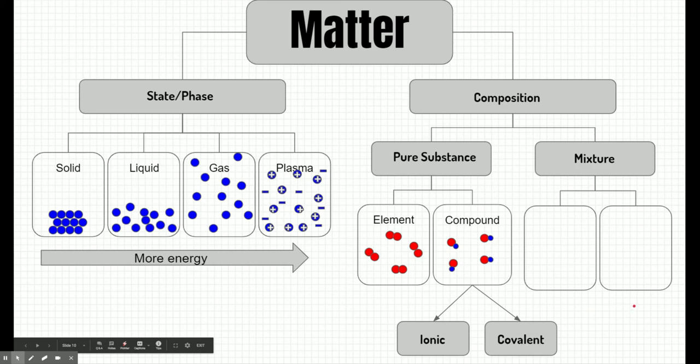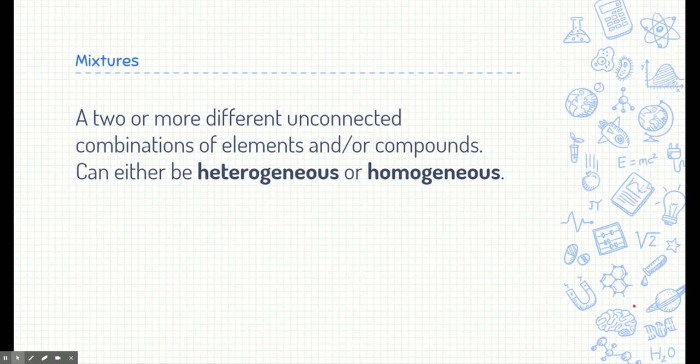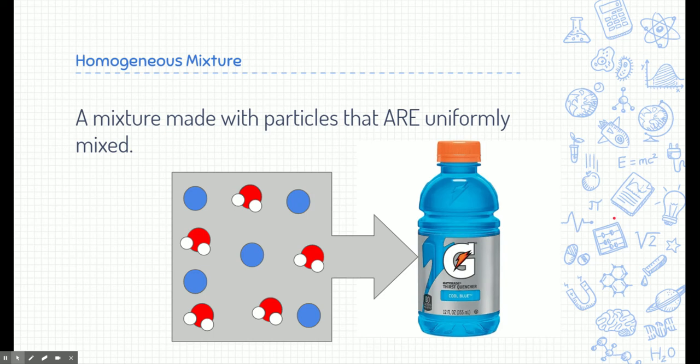Let's talk about mixtures, the other way we can classify matter based on its composition. A mixture or mixtures are two or more different unconnected combinations of elements or compounds, and they can either be heterogeneous or homogeneous. This slide is mostly a definition. Probably doesn't mean much just looking at it. Let's take a look closer at two different types of mixtures. The first one we're going to look at is a homogeneous mixture. Homo means the same. So in this term, a homogeneous mixture is a mixture with particles that are uniformly mixed or they're the same throughout. Let's take a look at Gatorade. If you've ever drank in Gatorade, this is just a sugary drink. We've oversimplified this drink to be just sugar and water. If we were to take a close look, here's what the particles would look like. Notice that there's water particles and there's also sugar particles and they're uniformly or evenly mixed throughout. You can drink all of the Gatorade. It doesn't matter if you start at the top or drink a little bit from the bottom. It's going to taste the same throughout because the particles are uniformly mixed.